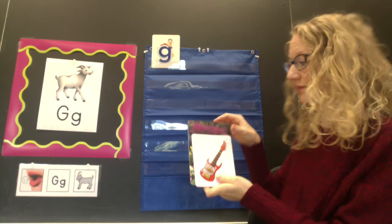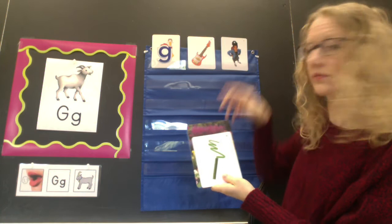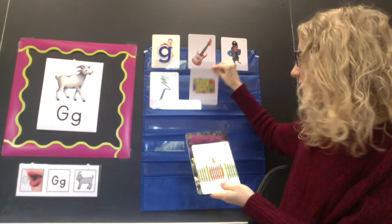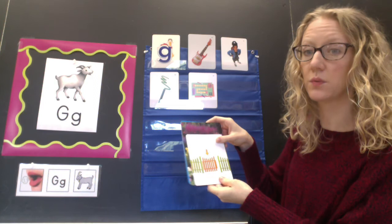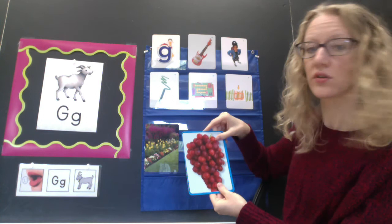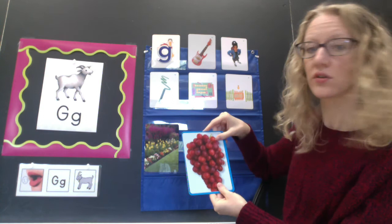Some more things that start with the G sound include guitar, girl, green, game, gate. A gate is the part of the fence that opens, the part that you walk through. Garden, grapes, glove. There are many more things that start with the g sound. Can you think of a few more?